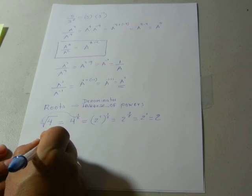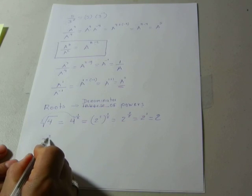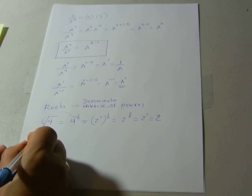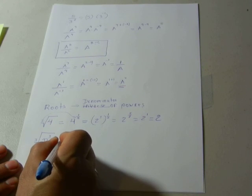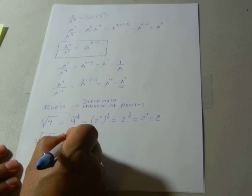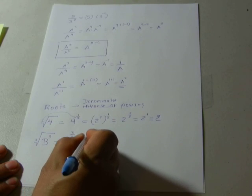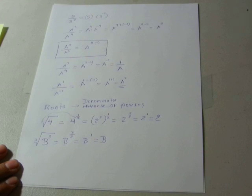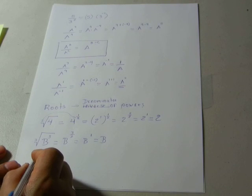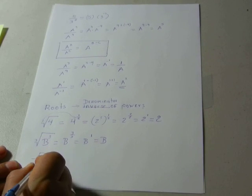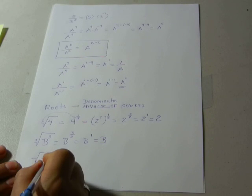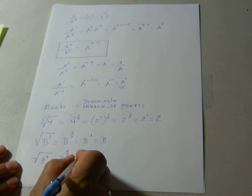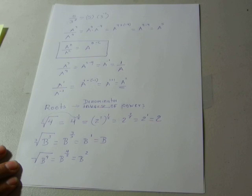Let's try another example: v to the third power. Whenever we have a cube power, we can always cancel it with a cubic root. The cubic root of v cubed is the same as v to the 3 divided by 3, which gives v to the 1 — just v. What about the square root of v to the fourth power? That is v to the 4 divided by 2, which is v to the second power.